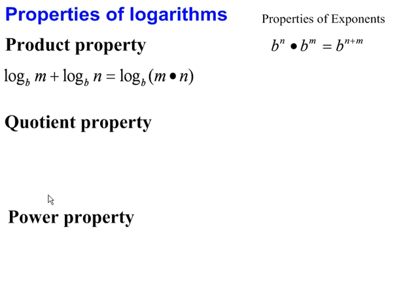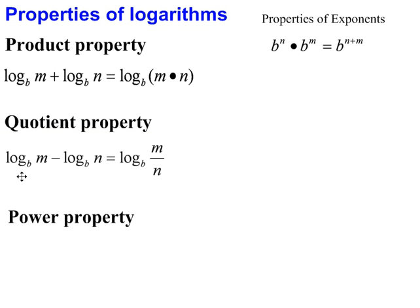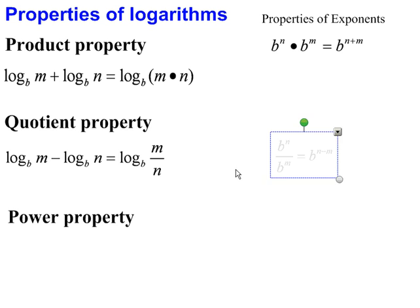In the quotient property, we have log base b of m minus log base b of n rewritten as log base b of m divided by n — that's a quotient. This also relates to properties of exponents. If you recall, b to the n divided by b to the m equals b to the n minus m.